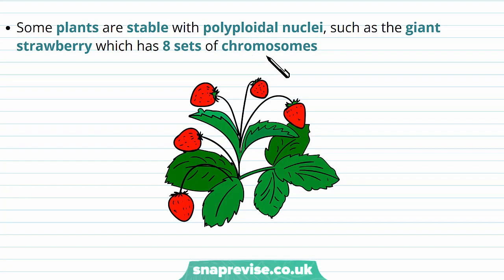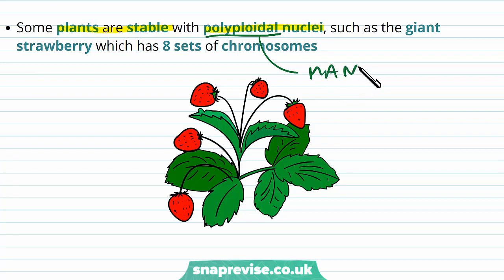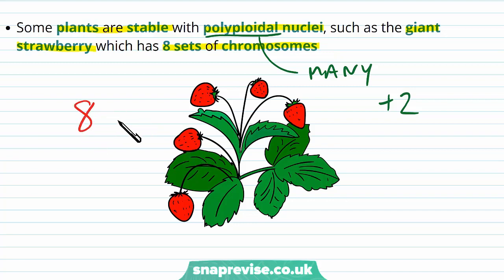There are some organisms which can deal with this. Some plants are stable with polyploid nuclei — meaning they can survive with more than two sets of chromosomes. One example of an organism which can deal with this is the giant strawberry, which can have 8 sets of chromosomes. So the cells in the giant strawberry can have 8 versions of chromosomes — whereas in a human cell this would be very unstable — and this is called octoploidy.